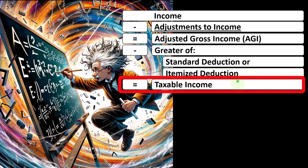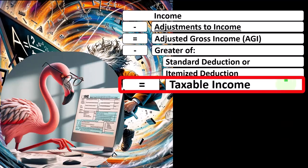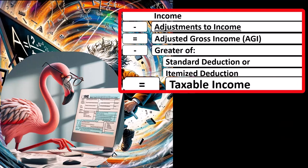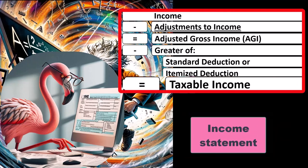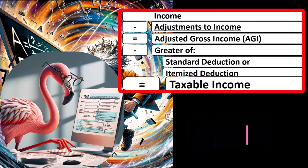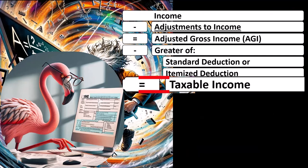That gets you to the taxable income. So taxable income, this whole thing is basically the income statement side of things for the income tax formula. Income statements are income minus expense.